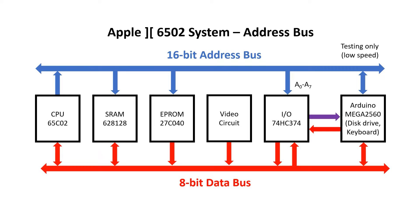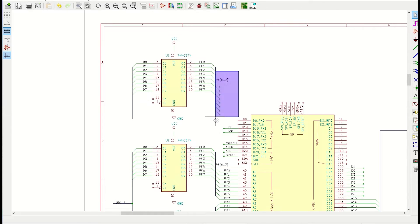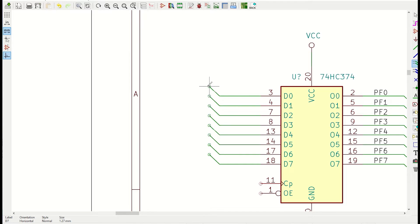I'm going to need another octal D-type flip-flop to capture the lower bits of the address bus when the CPU is writing to it. That way, the Arduino can be sure it's reading a CPU address for I/O, and not a video address.